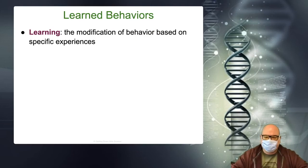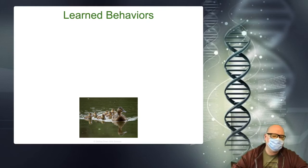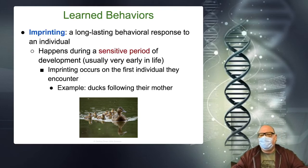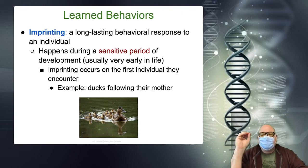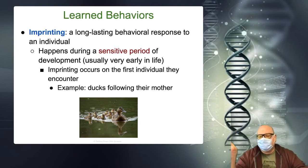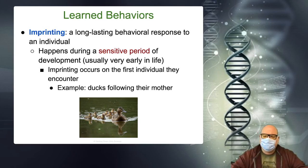Now let's look at some learned behaviors. Imprinting. Animals like ducks — when they are born, they have a brief period of time. A lot of people say it's the first thing they see, but that's not exactly true. They have a brief period of time where they will imprint on their mother, and from then on until they reach maturity, the ducks will follow mom wherever she goes. If you take mom out and replace her with a chicken, they'll follow the chicken around.